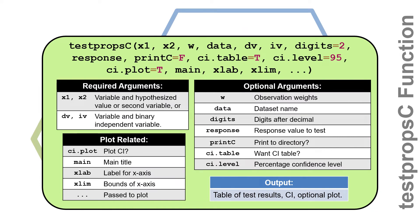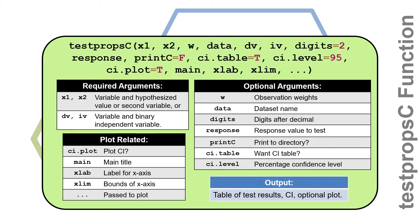To use the testpropc function, you either have to use the x1 and x2 arguments or the dv and iv arguments. You use one set of arguments or the other, but not both at the same time. If you're using testpropc for a one-sample hypothesis test, you'll use the x1 and x2 arguments. But if you're doing a two-sample hypothesis test, whether you use x1 and x2 or dv and iv depends on the nature of the problem, as we'll see.